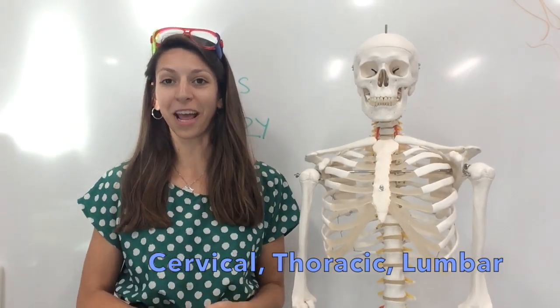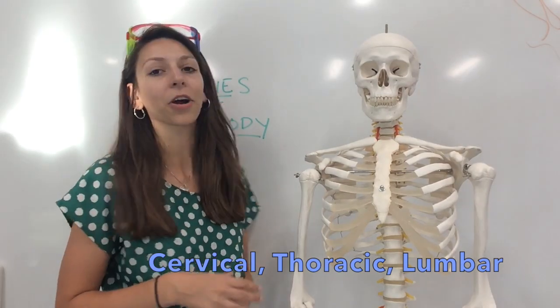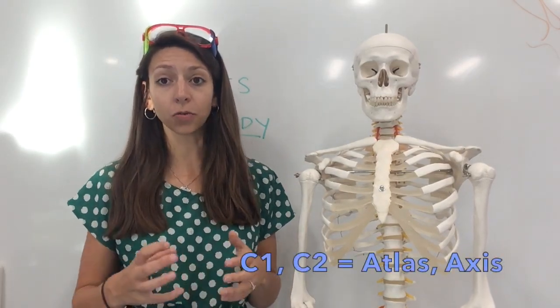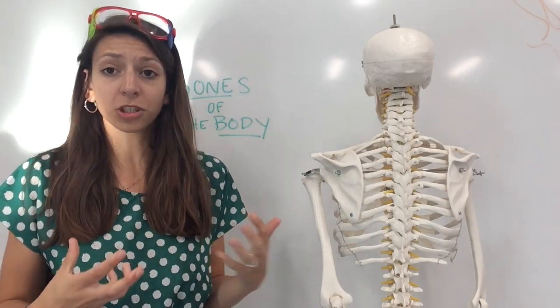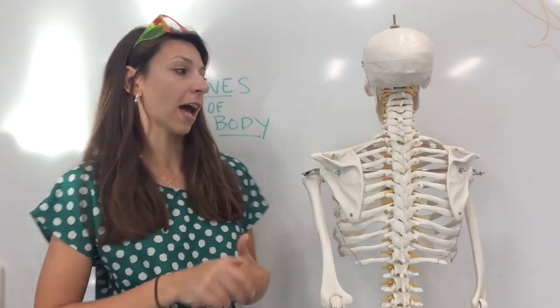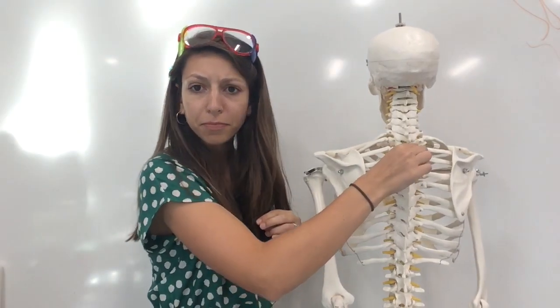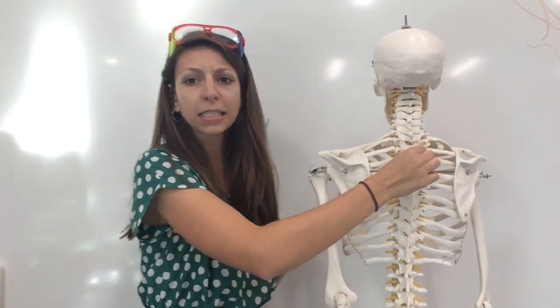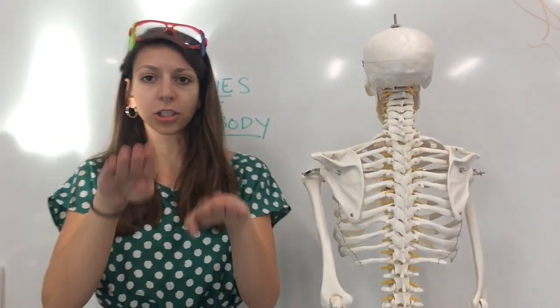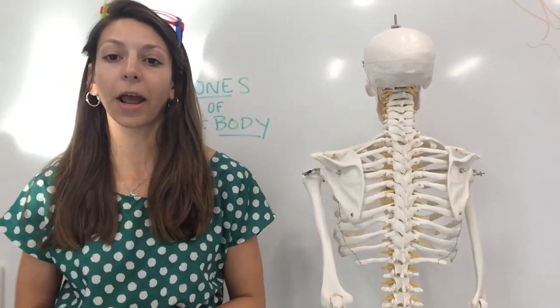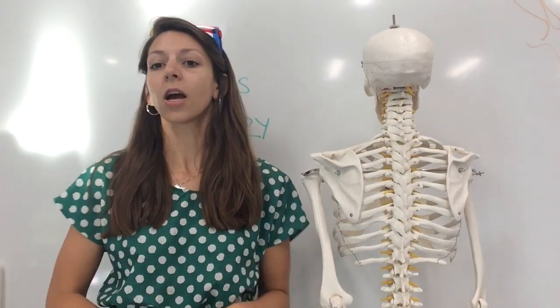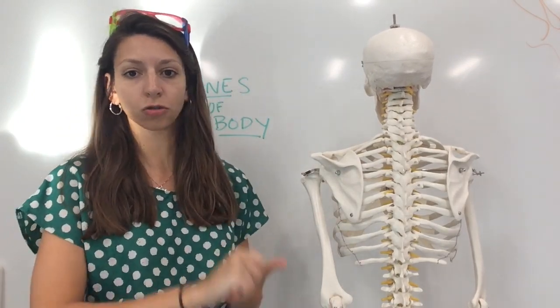Our cervical vertebrae, also known as the C-spine, include seven different bones, and the first two bones are called the atlas and the axis. Moving down, we get into our thoracic vertebrae, of which there are 12. These are larger than cervical, bear more stress from increased body weight, each has a long pointed spinous process, and each articulates with the next. Our lumbar vertebrae are adapted to support more weight, allowing for larger, stronger bodies.